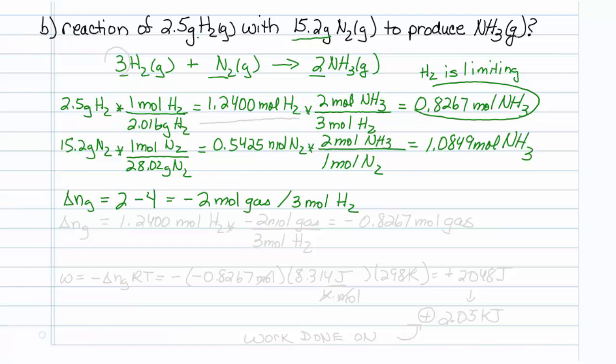Because for the reaction that's written, where delta NG is minus 2 moles of gas, the reaction shows 3 moles of H2. So now we can scale this based upon our hydrogen.